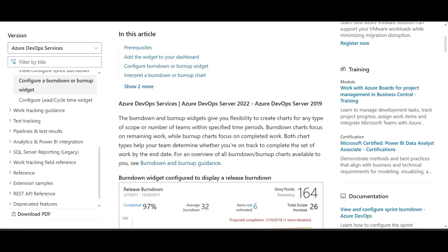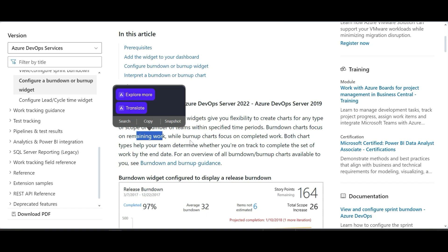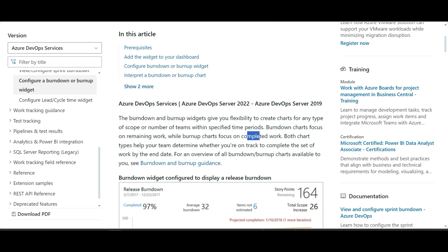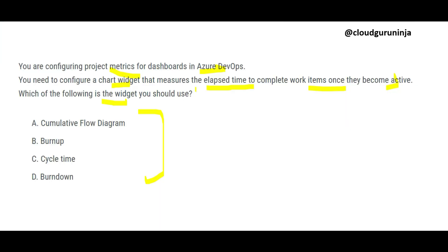Burn down and burn up charts focus on work status. Burn down shows remaining work — what is still left. Burn up shows completed work — what tasks are done. In this question, they reference burn up, but we do not want to understand which tasks are complete; we want to understand the time taken to complete that work.